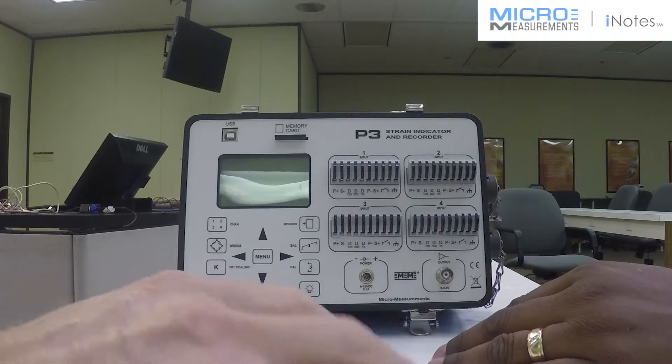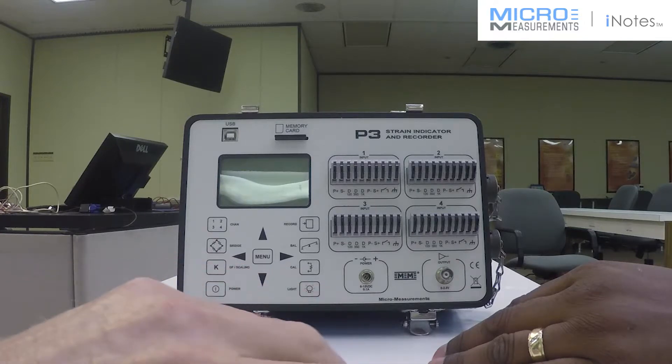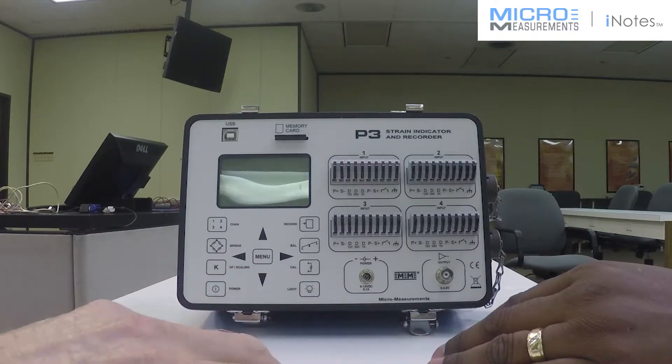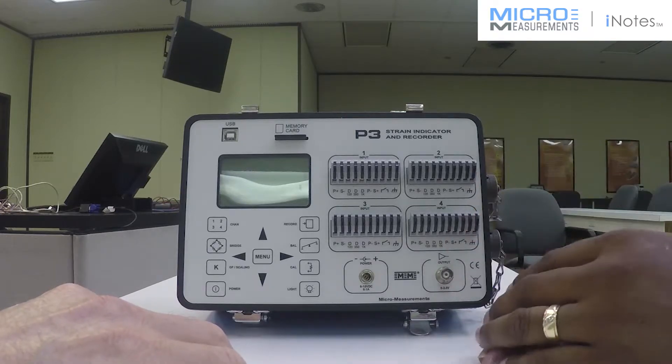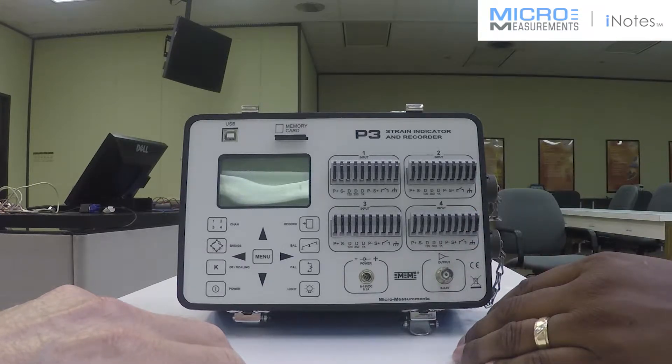And do you need to do external bridge completion if you're bringing in like a quarter bridge circuit? That's a good question. The box actually has the bridge completion built into it, so it works very well for making simple connections with strain gauges.